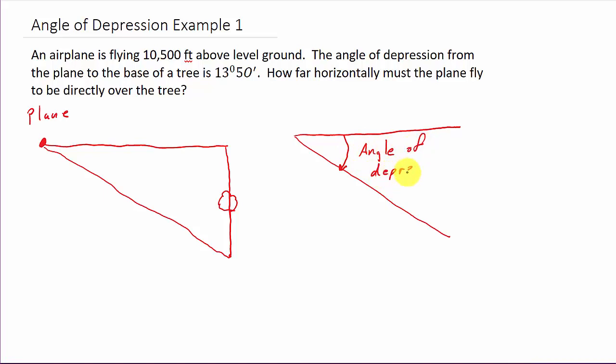Students miss this all the time. Your angle of depression is measured off the horizontal. So from the horizontal, if it's 13 degrees 50 minutes and that's the angle of depression, it's this angle here. So this is 13 degrees 50 minutes.